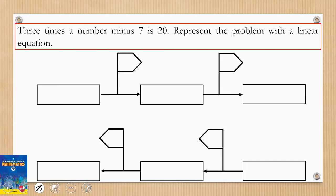Now let's look at the question: three times a number - I don't know the number so I'll represent it by x - three times a number minus 7 is 20. This is the equation: 3x - 7 = 20. We want to represent this equation.